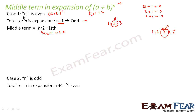Please note: when n is even, the total number of terms is odd. Since the total number of terms is odd, there is only one middle term, and it is nothing but the (n/2 + 1)th term.